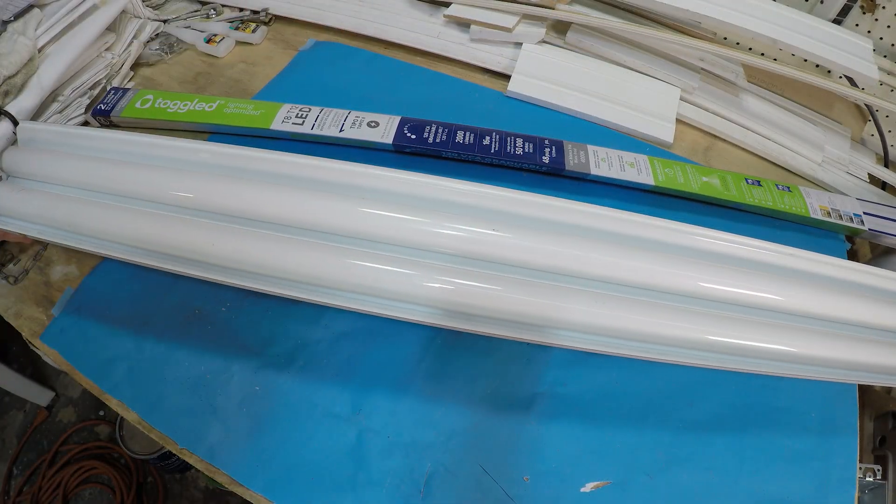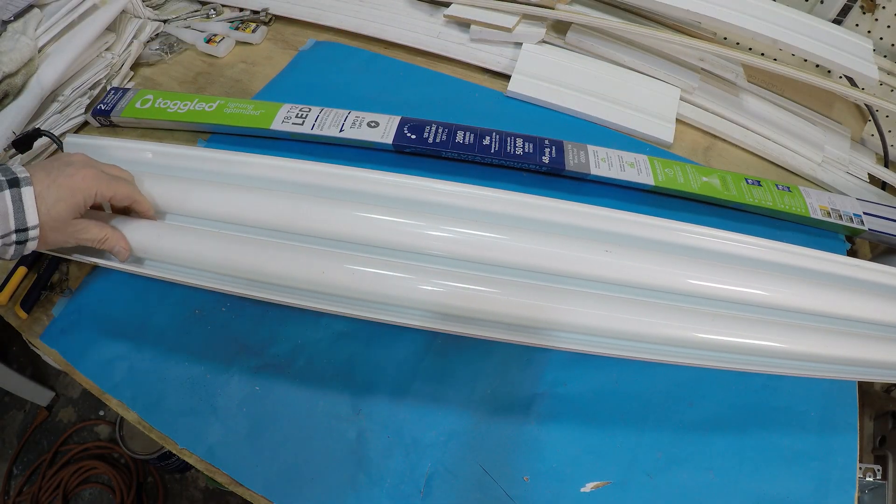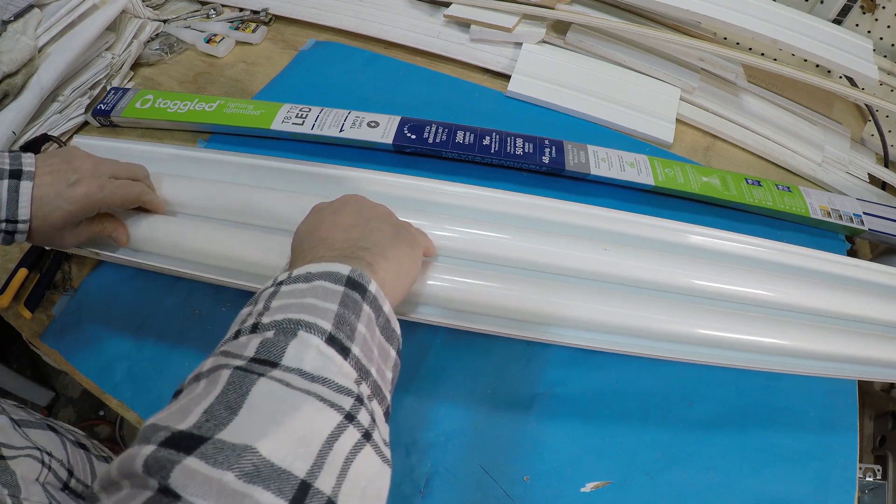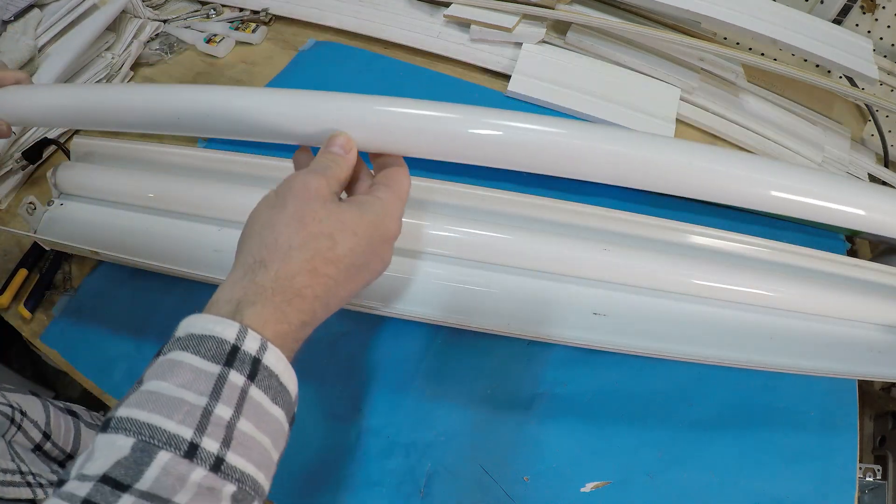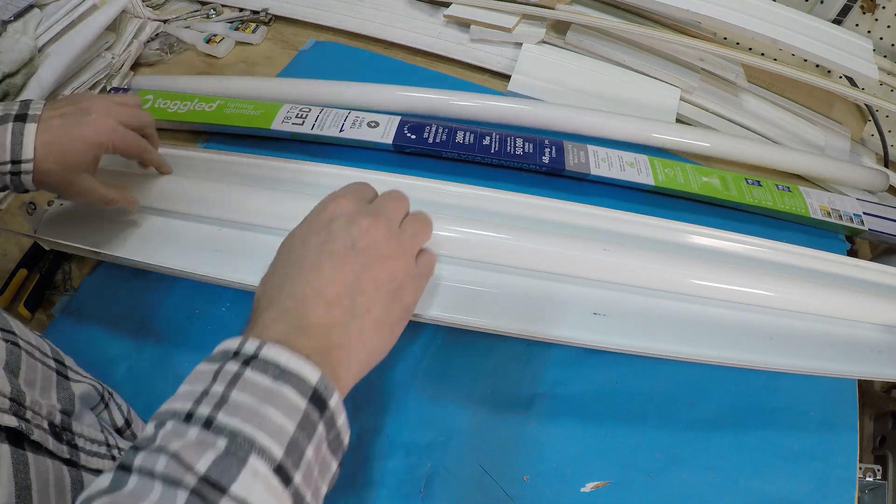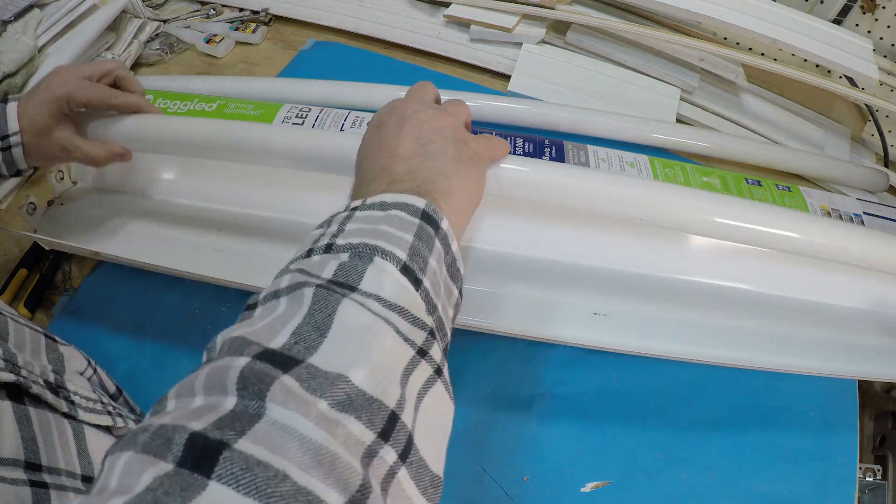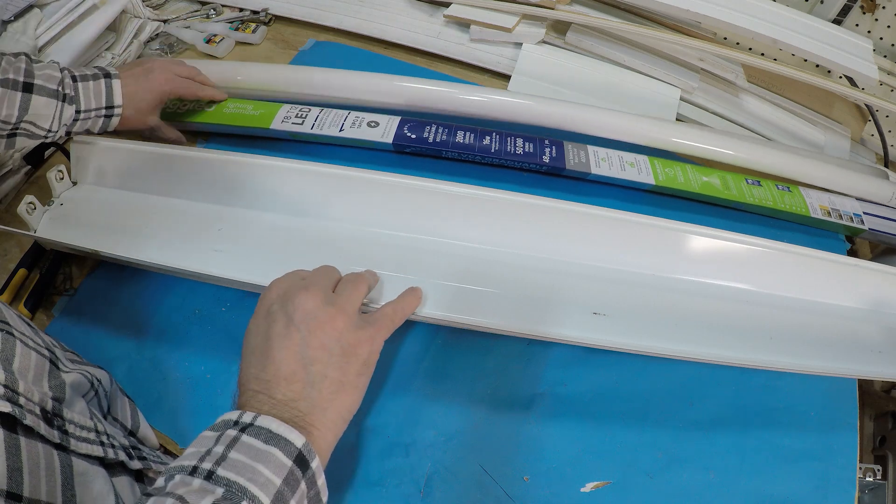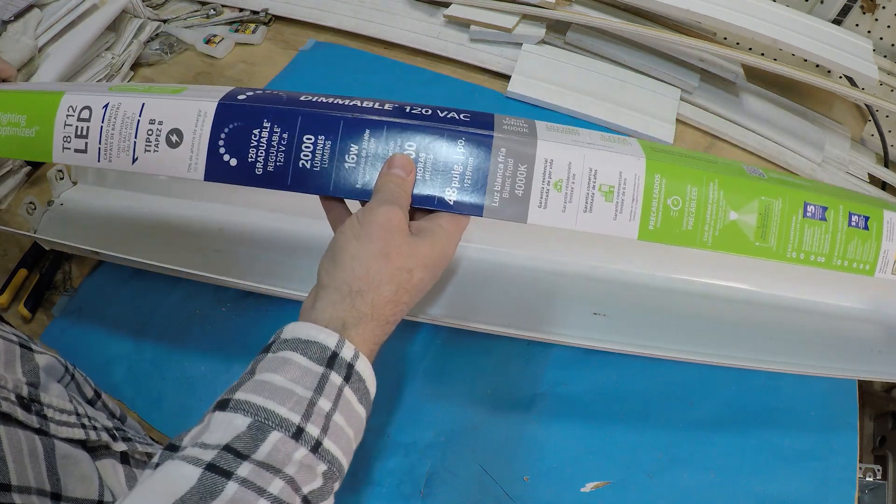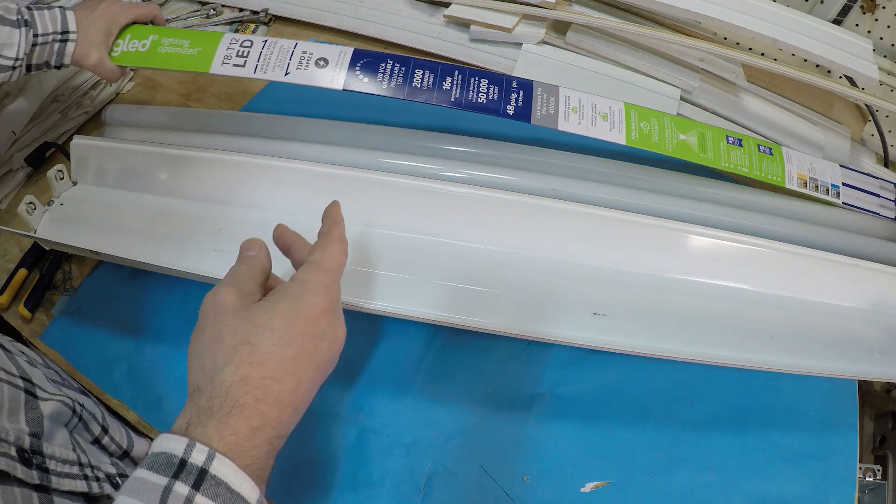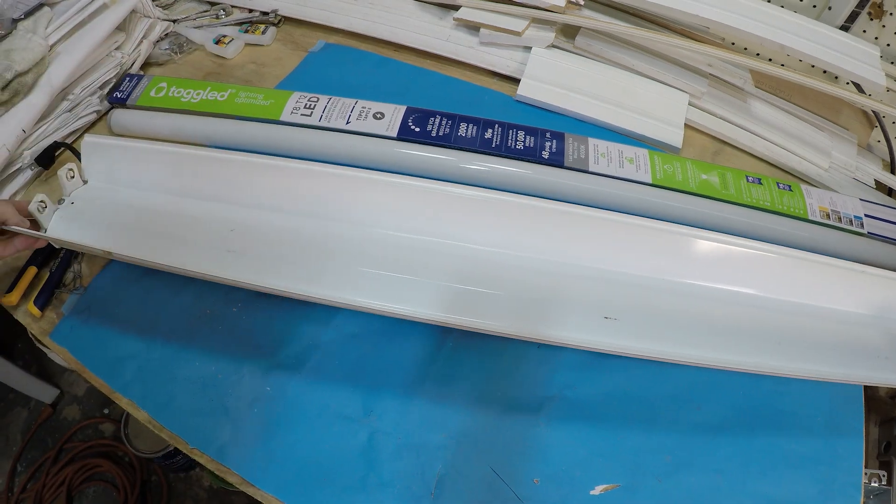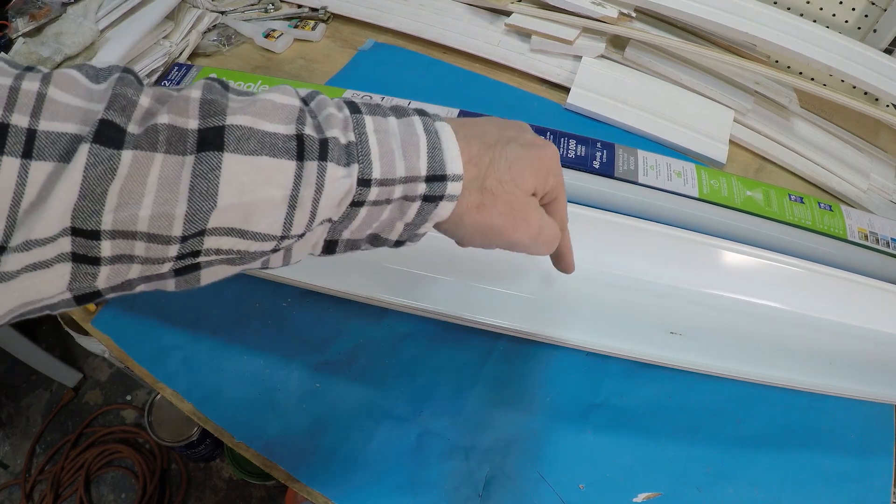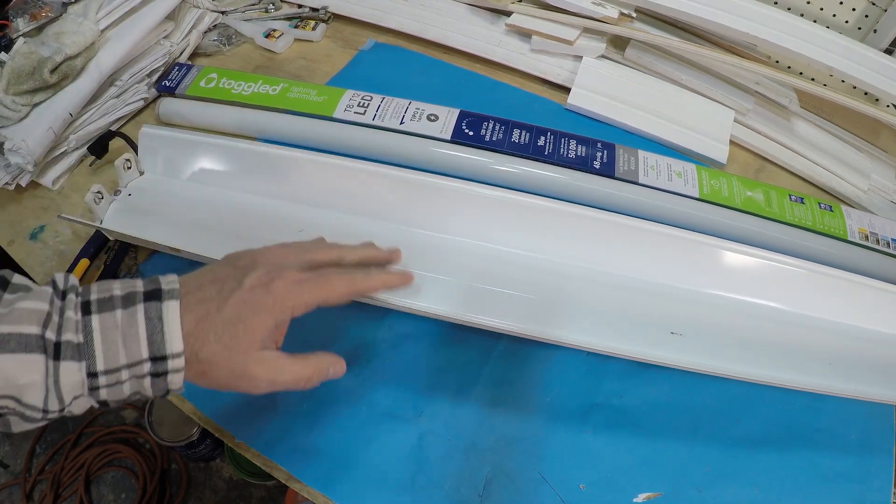Here we have the fixture, and the first thing I'm going to do is remove the bulbs. You just twist, and they pop out. Half a turn, and they pop out. Here are the replacements, by the way. Again, I'll link to where you can get them online. And we're just going to, we need to remove the cover so we can get to the ballast inside.